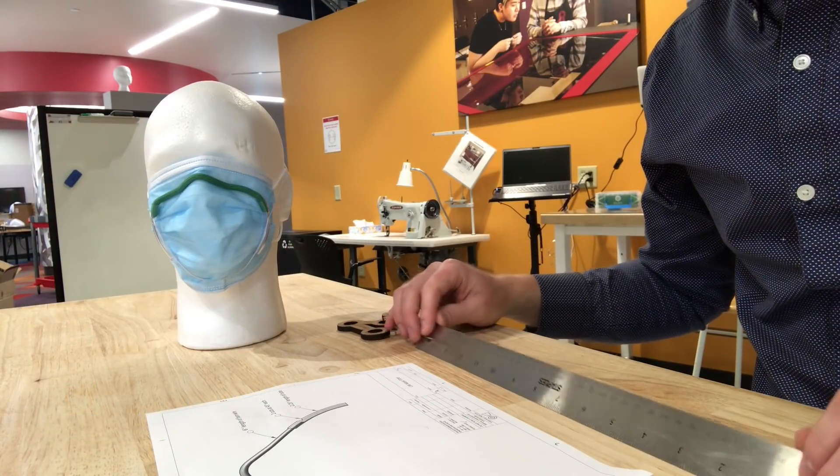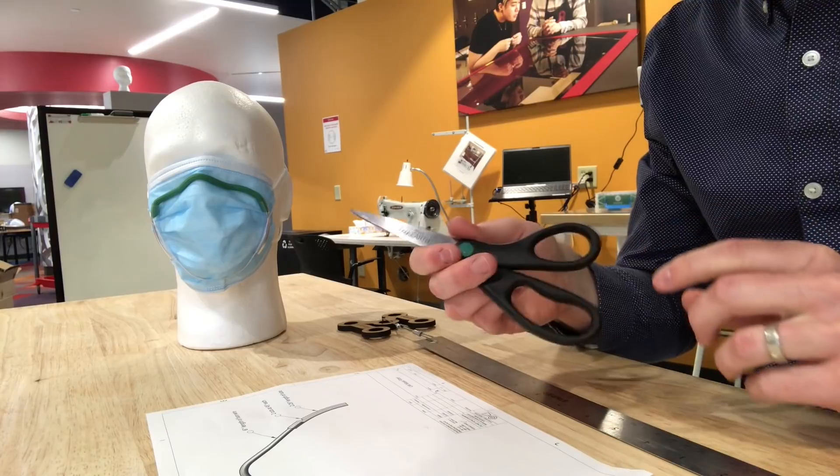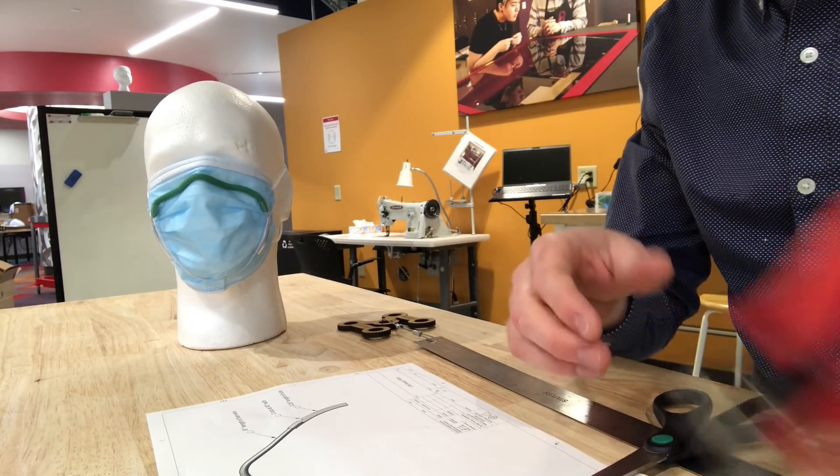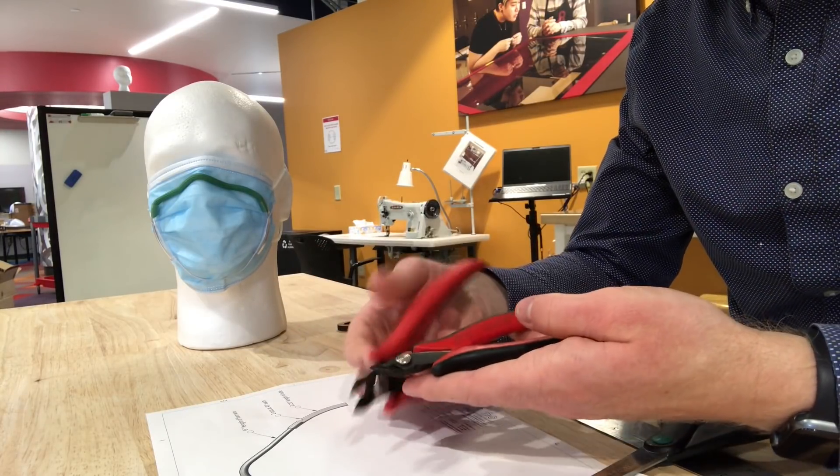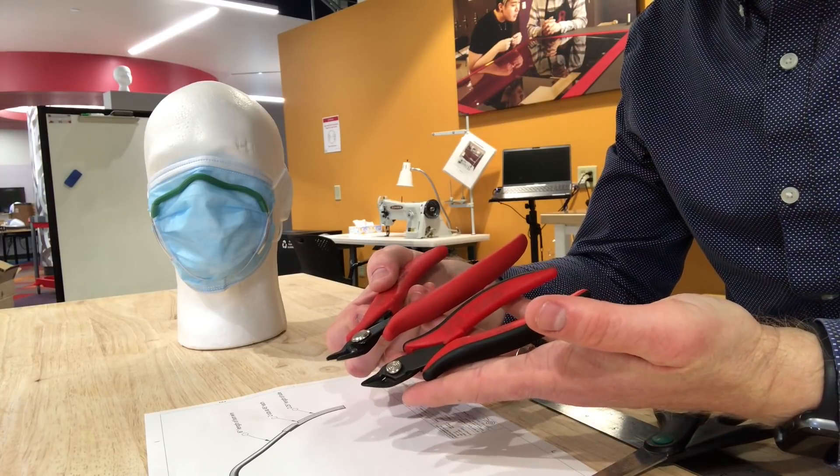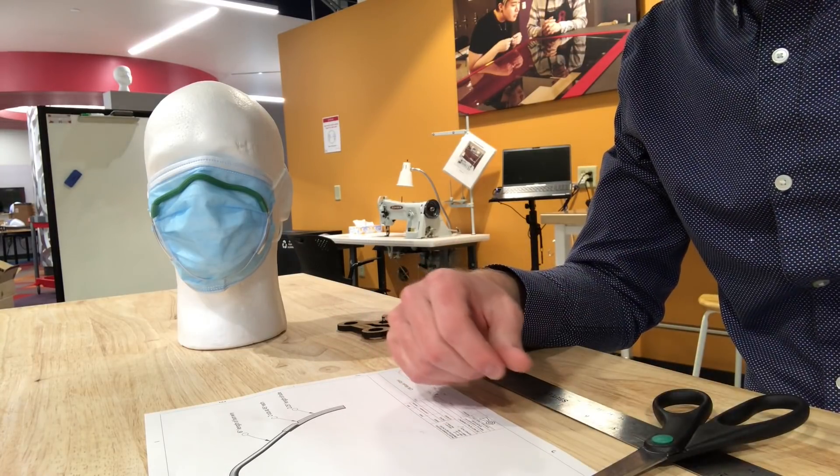You essentially need a ruler for measuring, a pair of scissors, and if you have access to other cutting tools, it could be useful to have some of these snips, but they're not critical.